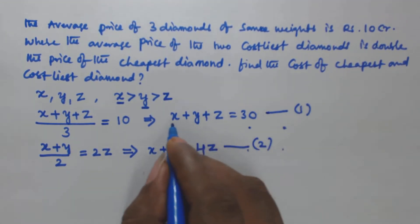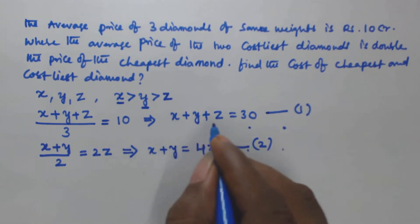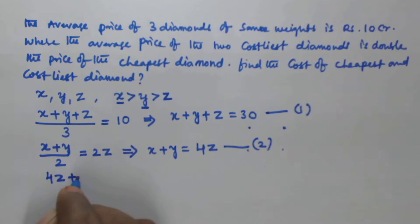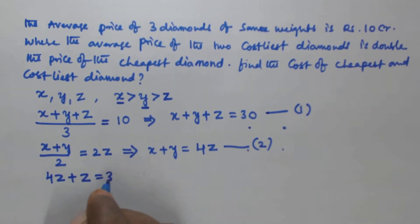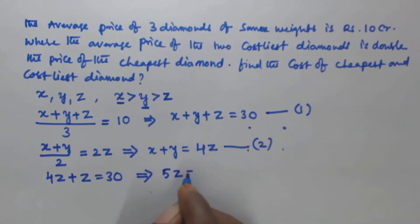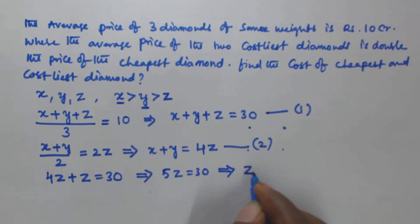Now substitute the value from Equation 2 into Equation 1. Since x + y = 4z, we get 4z + z = 30, which gives us 5z = 30.